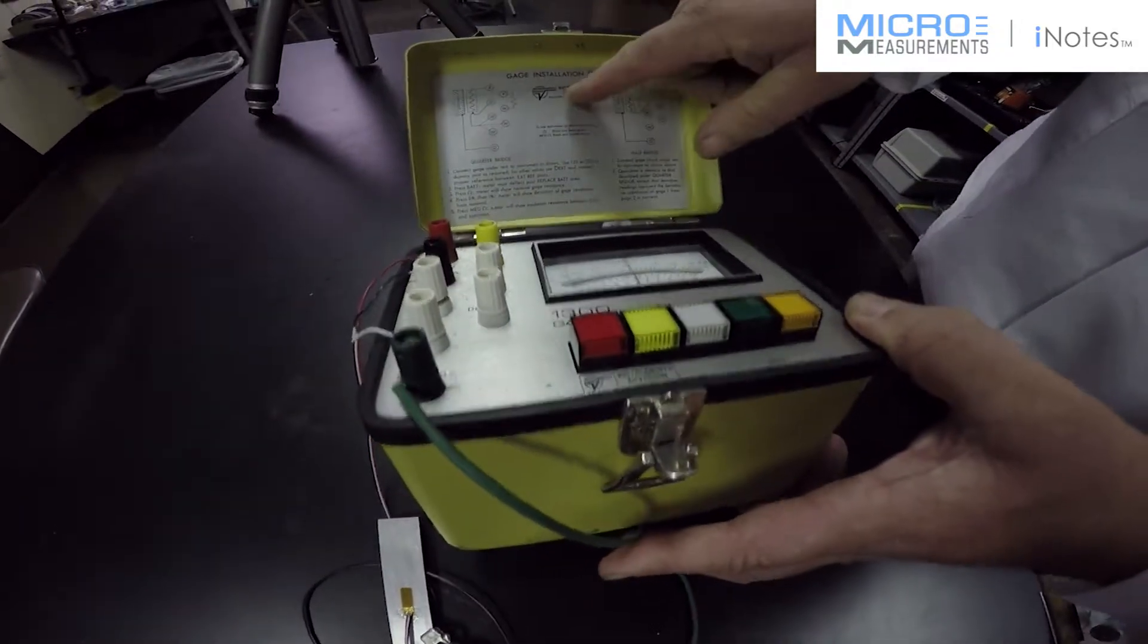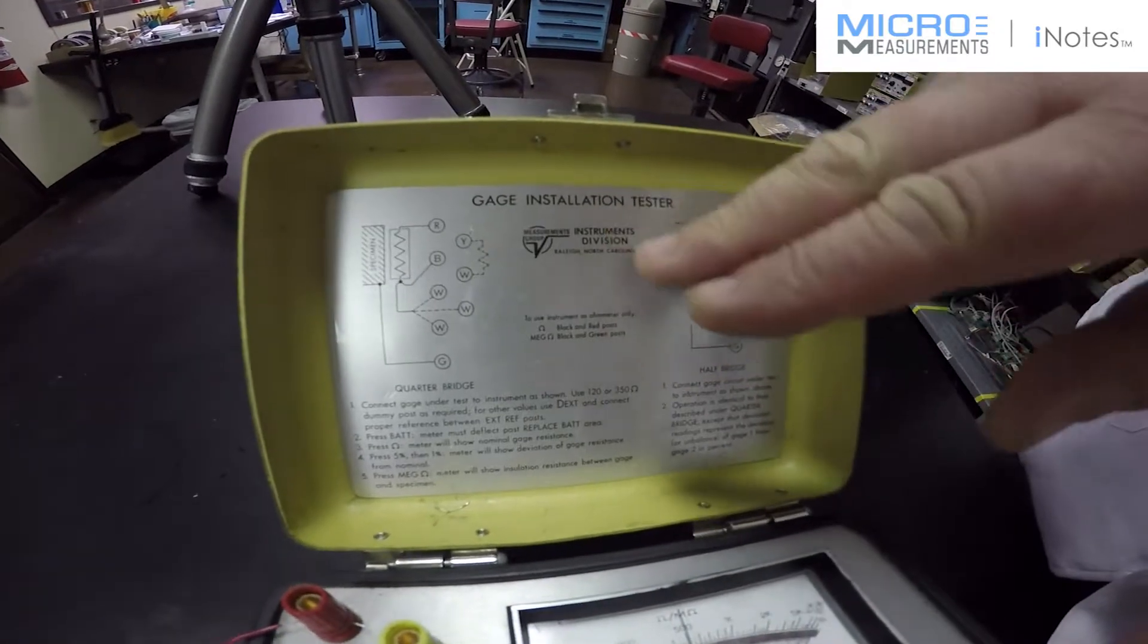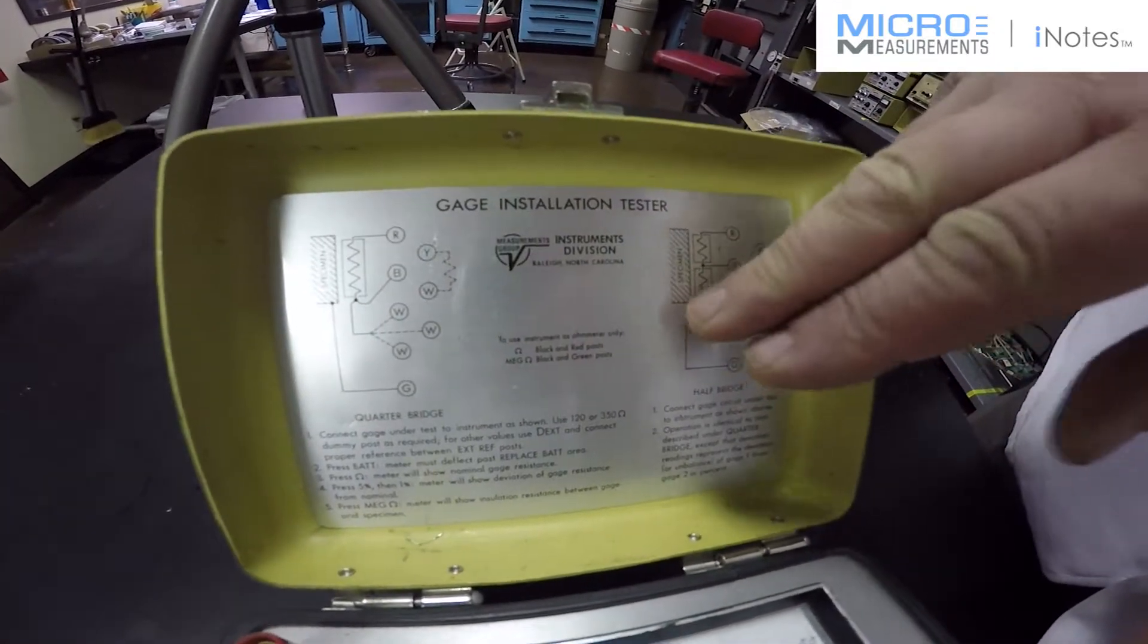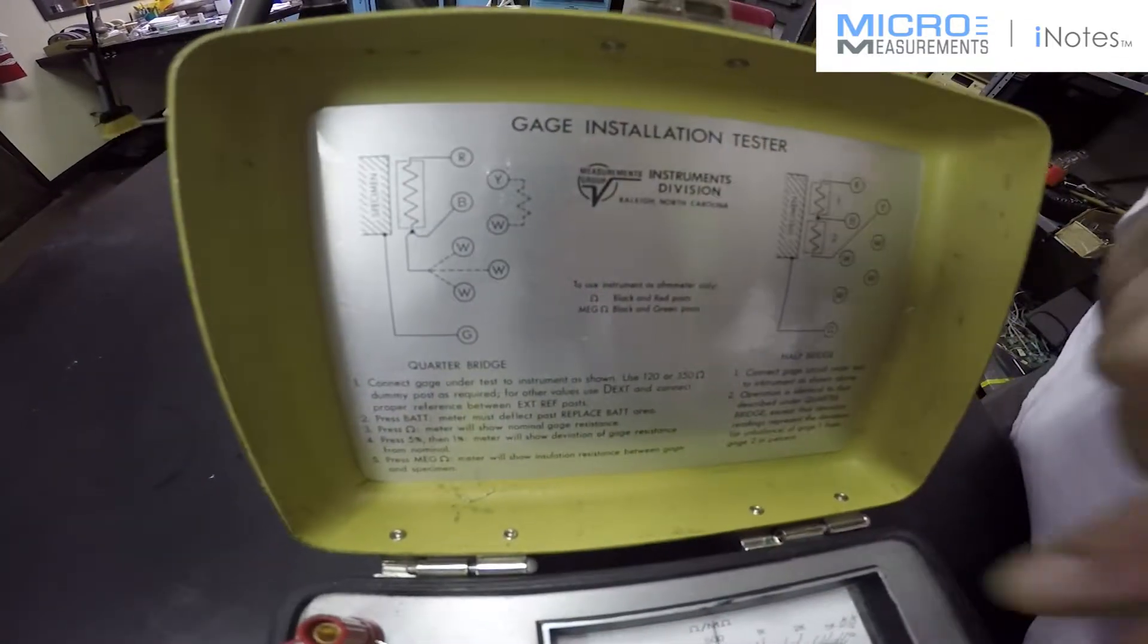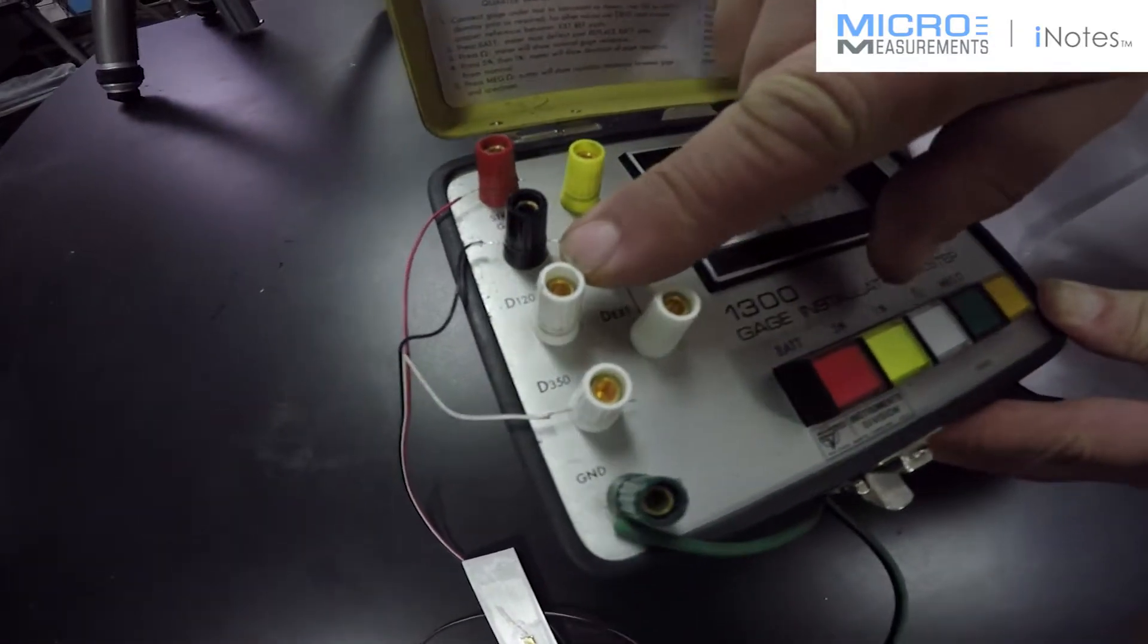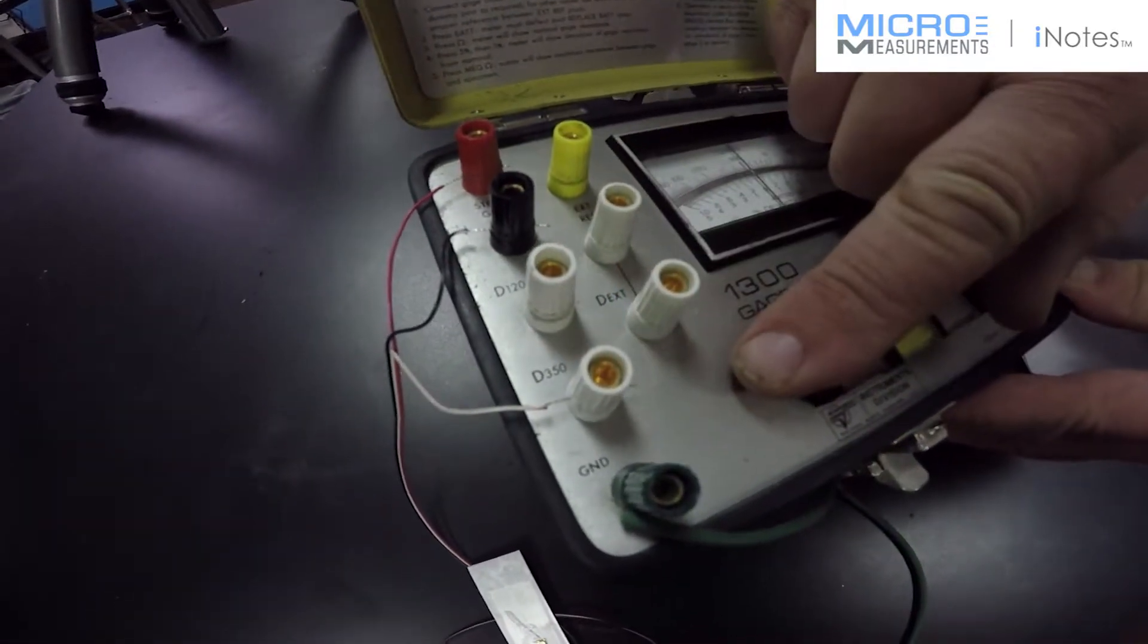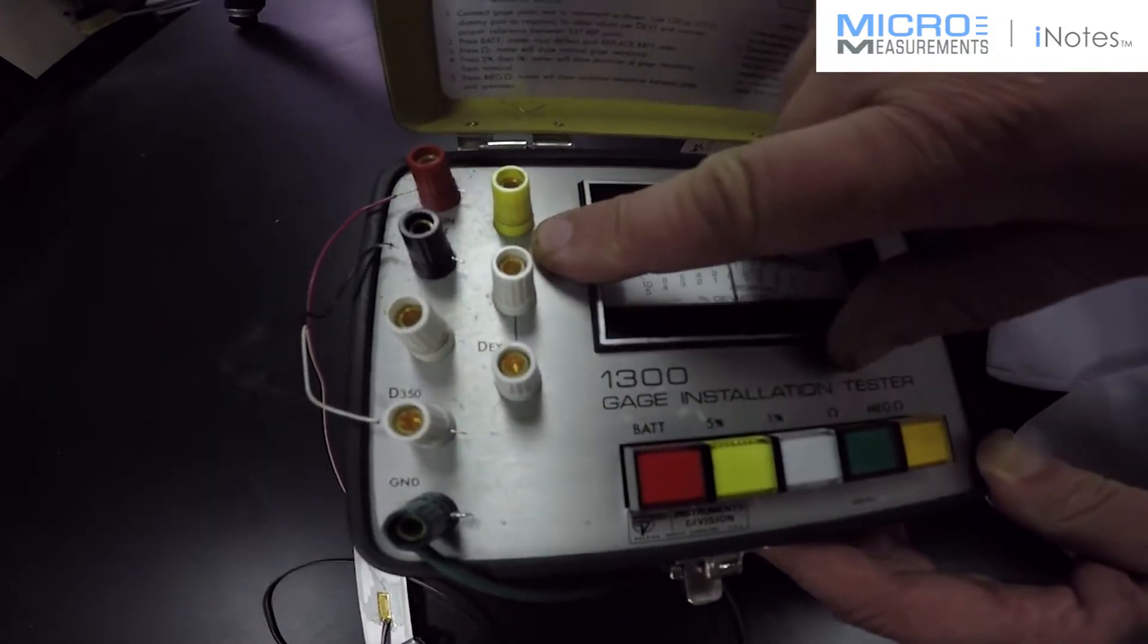This instrument works with just about every strain gauge possibility. You can connect to it half bridges, full bridges, quarter bridges, and really any resistance. It has built in here dummy resistors for connecting a 120 or 350 ohm bridge. If your gauge is 1000 or any other resistance, you can hook up an external reference.